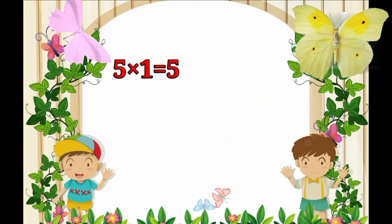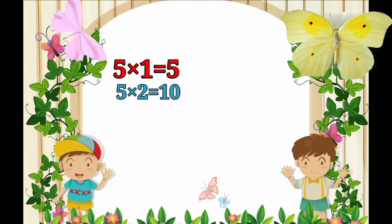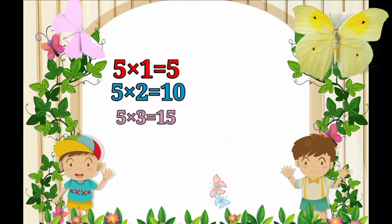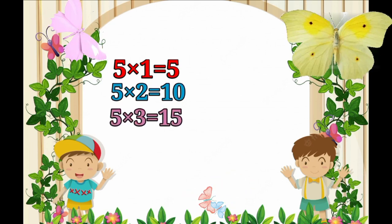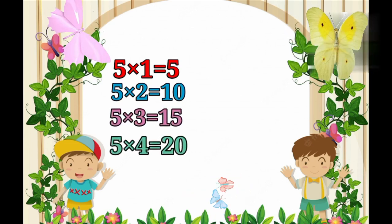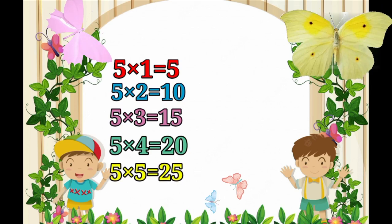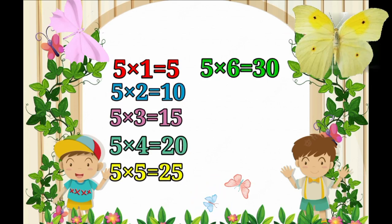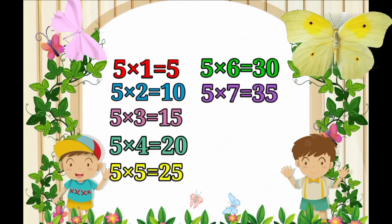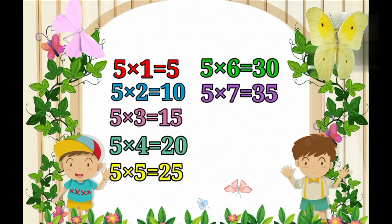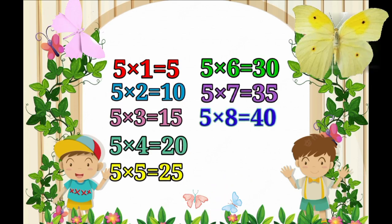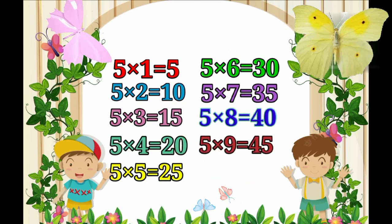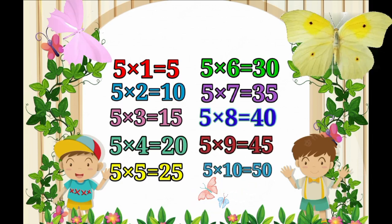Table of 5 recap: 5×1=5, 5×2=10, 5×3=15, 5×4=20, 5×5=25, 5×6=30, 5×7=35, 5×8=40, 5×9=45, 5×10=50.